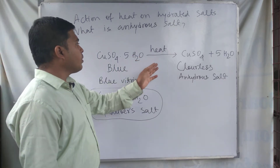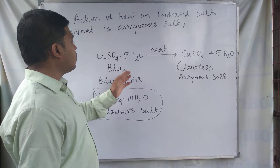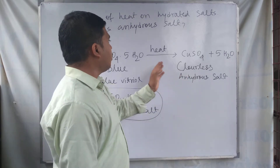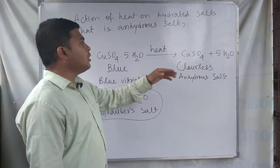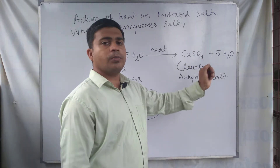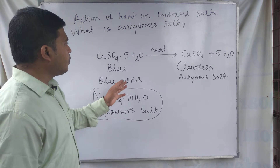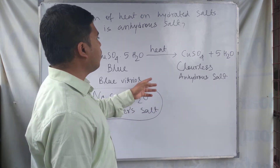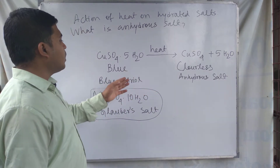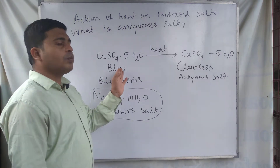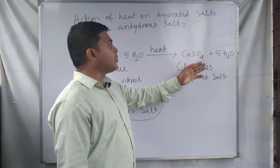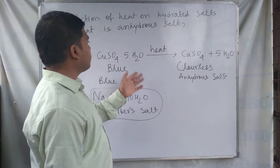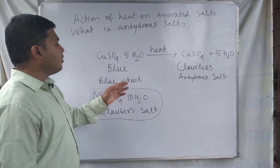Blue vitriol, when heated, the blue color of the blue vitriol becomes colorless and the salt formed is called anhydrous salt, because it loses its water of crystallization fully. In the case of heating blue vitriol, it loses its color. Blue vitriol is blue in color generally, and on heating the copper sulphate formed is a colorless substance, and water is given off from the crystal of copper sulphate·5H₂O, which is blue vitriol.